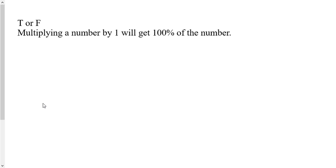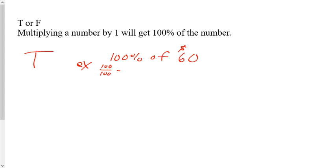True or false: multiplying a number by one will get 100% of the number. The answer is true. And if you needed to prove it on a test, you would say, for example, 100% of $60 — 100% is 100 over 100, which is equal to 1. So multiplying a number by one is actually getting 100%, because that's going to equal 60.